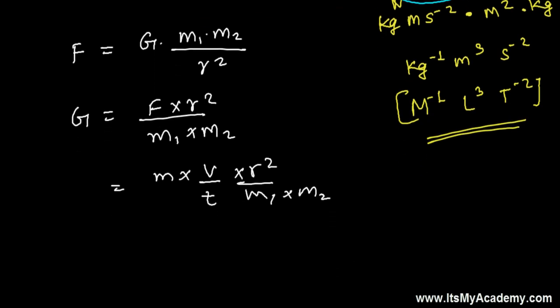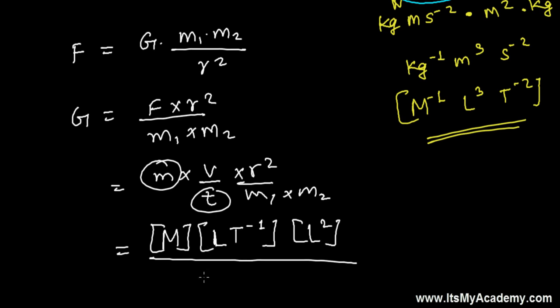Acceleration is velocity divided by time - means change in velocity divided by time. Times R squared and M1 into M2. Now let's put all the values. Velocity is a dimensional formula we know. So dimensional formula of this mass is M, and dimensional formula of this velocity is length per second, so L T minus 1.